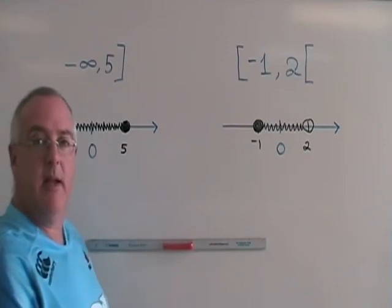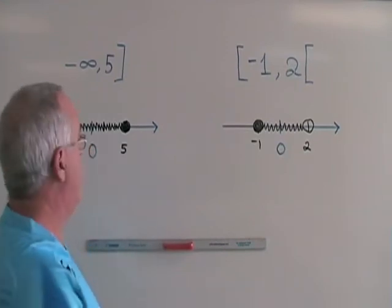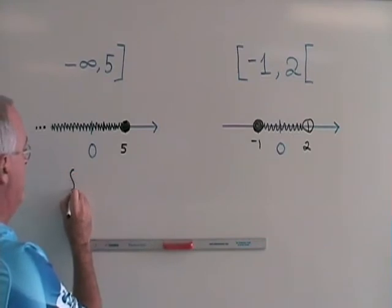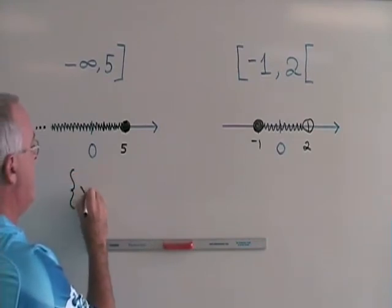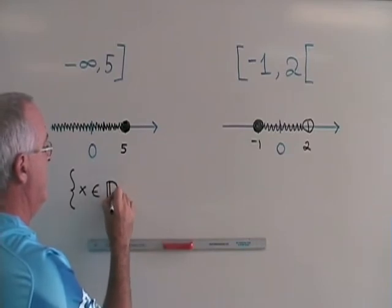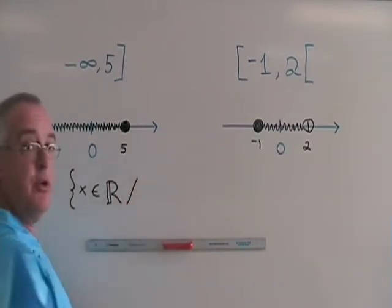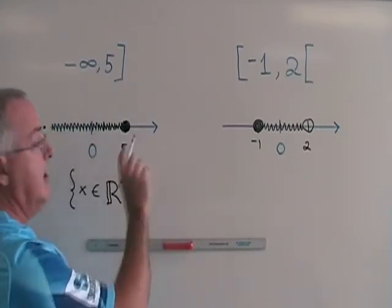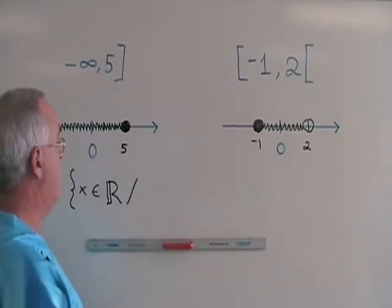Now to translate into set builder notation. To start with, I need to open a brace and write x is an element of real numbers and put a slash. I only have x and not x and y because this is only an x-axis. There is no y-axis involved.